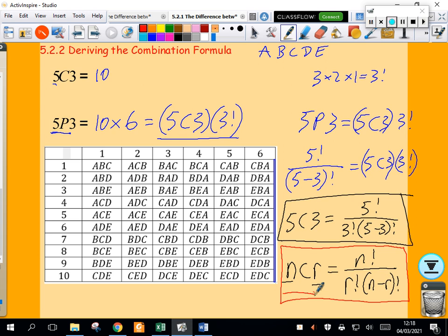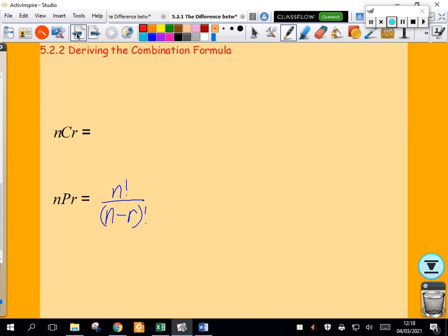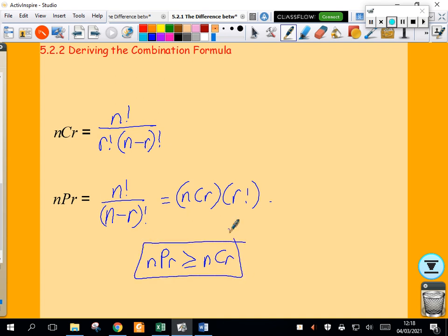On my calculator that's the second function of the division key. So deriving the combination formula, that is the combination formula. Let me go back to my original page. n choose r is n factorial over r factorial times n minus r factorial. And if I multiply that by r factorial, I get nPr. So nPr is n choose r multiplied by r factorial, which means the number of permutations is always greater than or equal to the number of combinations. Get used to your formulas and practice some of these problems from your textbooks.